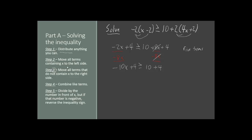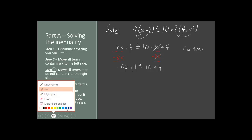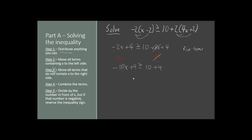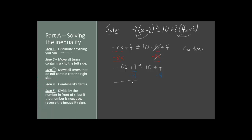Now in step 3, we're going to move any terms that do not contain x over to the right side. This positive 4 doesn't have x, so we can move that to the right side. In order to move that, we'll just subtract 4, and we'll do that to the right side as well. The 10 plus 4 that we already have is already on the right — we can leave that as is. So now we have negative 10x on the left. Plus 4 and minus 4 cancel out, so we don't write anything else. The greater than or equal to is still there. On the right side, the 10 is still here, and the plus 4 and minus 4 also cancel out.